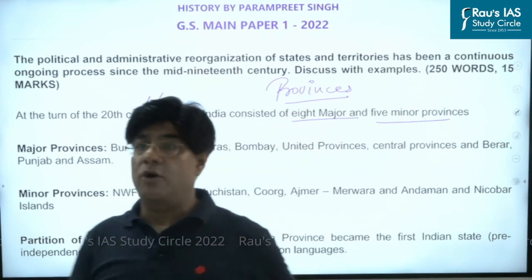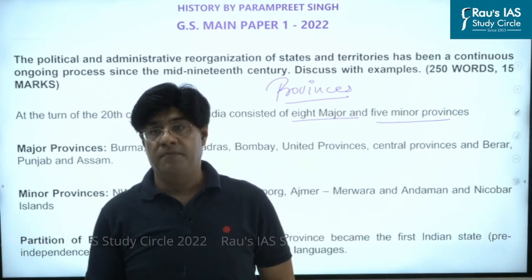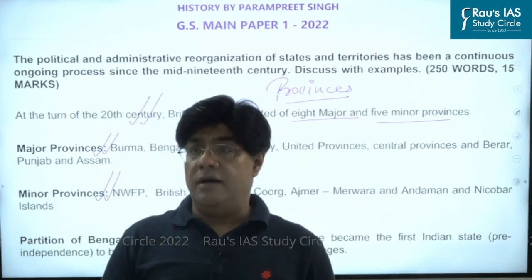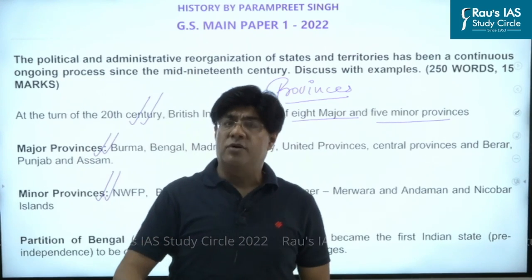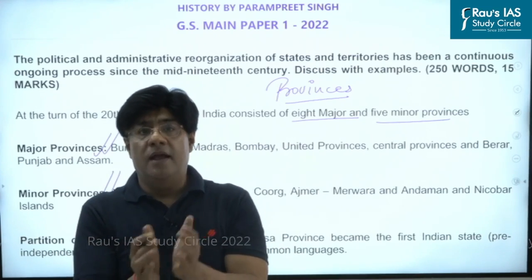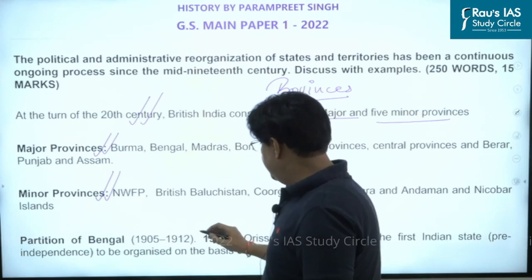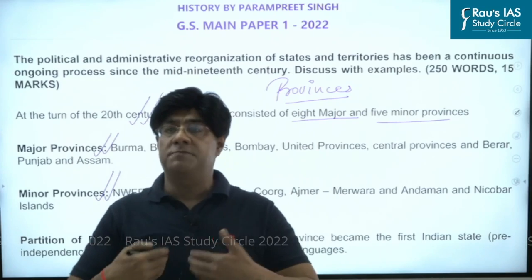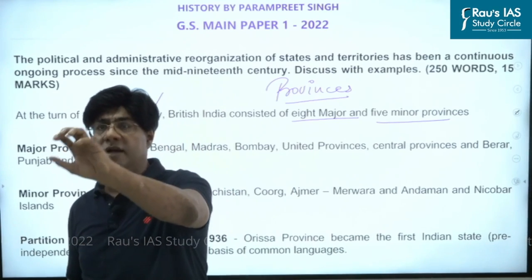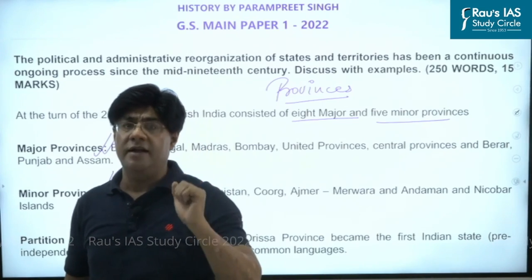The minor provinces are also called Chief Commissioner provinces, as major provinces were administered by governors. In the beginning of the 20th century, Bengal was partitioned. When studying modern history we study the Swadeshi movement, which arose because of the partition of Bengal — the first mass movement from the Congress platform. In the partition of Bengal, a new province called East Bengal and Assam was created in 1905. This province remained until 1911, when the British decided to annul the partition.